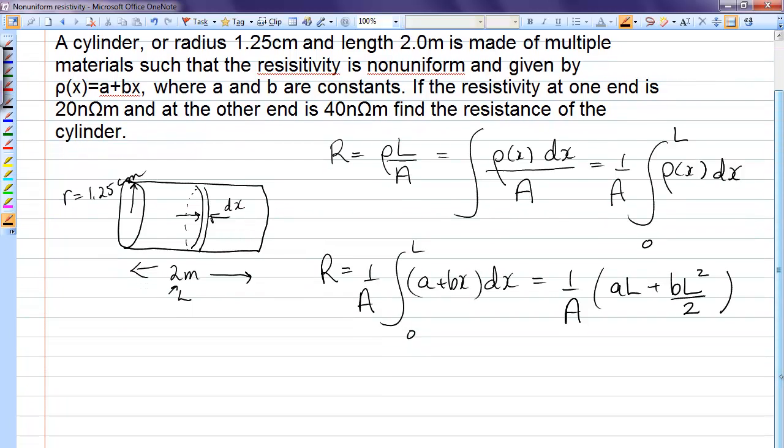Now we don't know A and B, but we do have the endpoint resistivities. So we know that the resistivity at x equals 0 is 20 nanohm meters, and we know at this end, the resistivity at L is equal to 40 nanohm meters. That will allow us to find A and B, the constants in the resistivity formula.